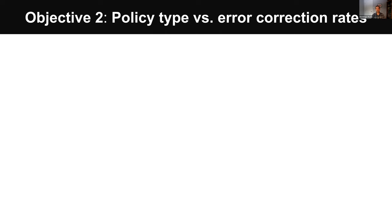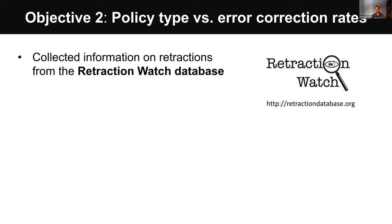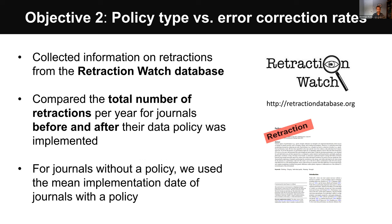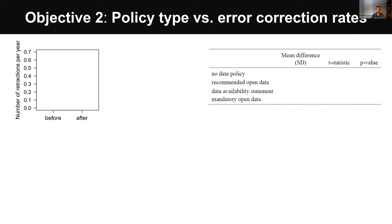In our second objective, we used these data to ask: when journals require open data, does this lead to more errors being corrected in scientific papers? To answer this question, we collected information on retractions from the Retraction Watch database — a comprehensive list of retractions going back to 2001. We then compared the total number of retractions per year for journals in ecology and evolution before and after their data policy was implemented. For journals without a policy, we used the mean implementation date of journals that do have a policy. This graph shows the number of retractions per year on the y-axis before and after the data policy was implemented.